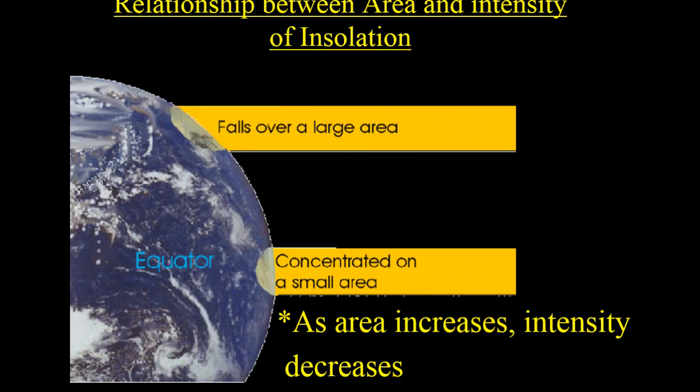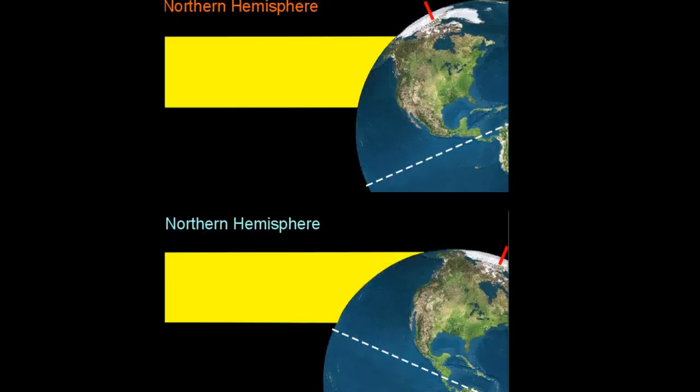Another picture shows that as the sun hits the Earth at a different angle, it will create a larger area, which means it's less intense. When it's hitting directly overhead, it's a smaller area, therefore more intense. So the relationship between area and intensity of insolation is that as area increases, intensity decreases.